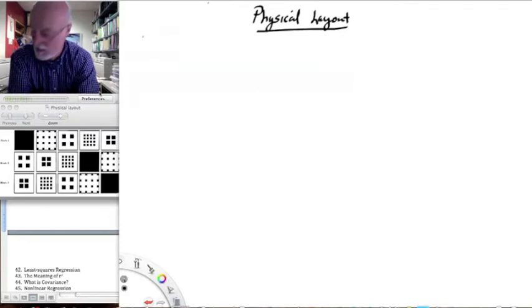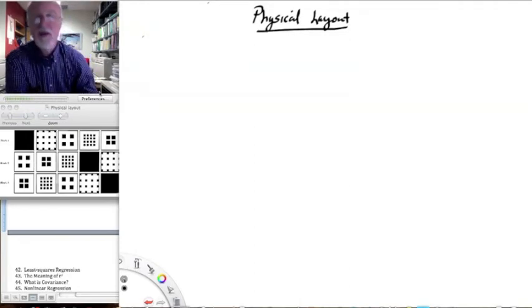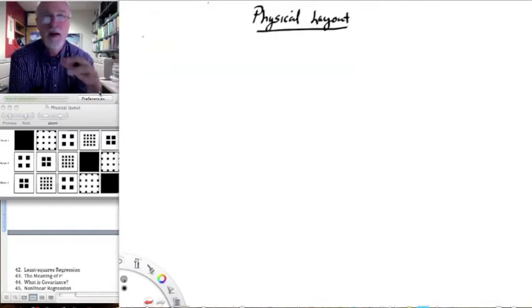So physical layout is where and how you're going to spatially array all the individuals in your study, and it's not intended to be a map or even a concept diagram of your experiment. It's intended to depict the actual physical layout.